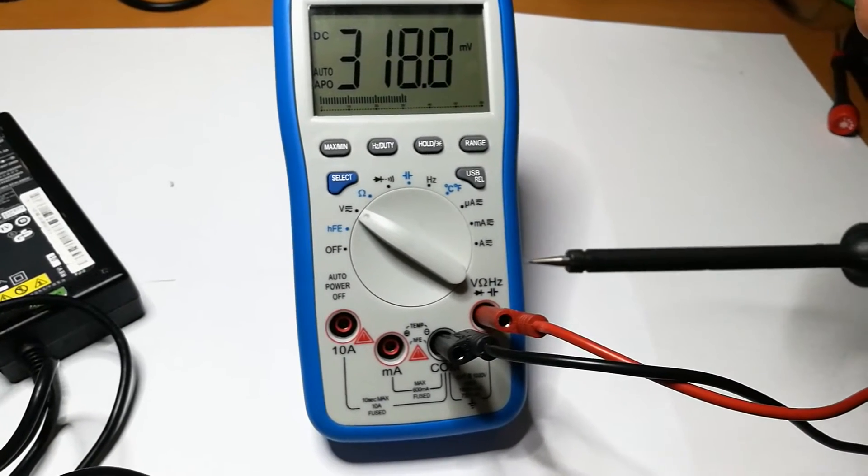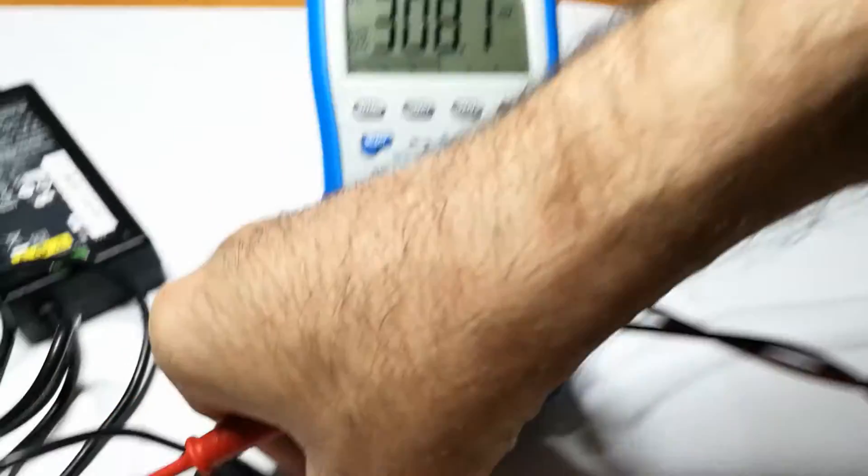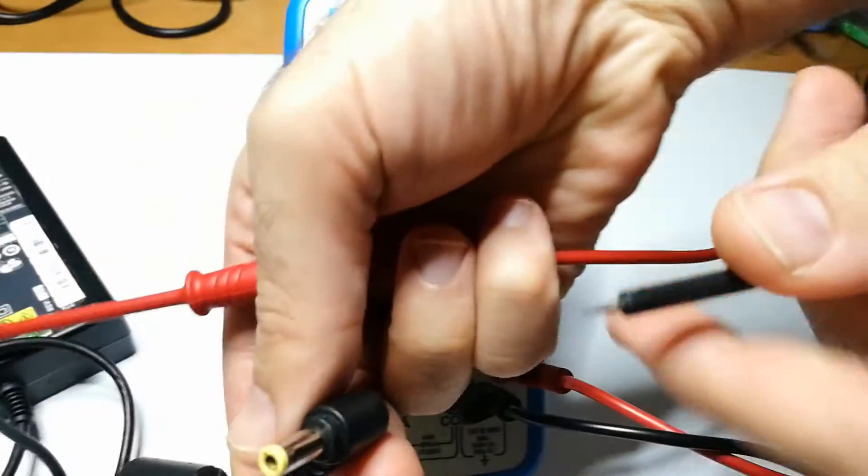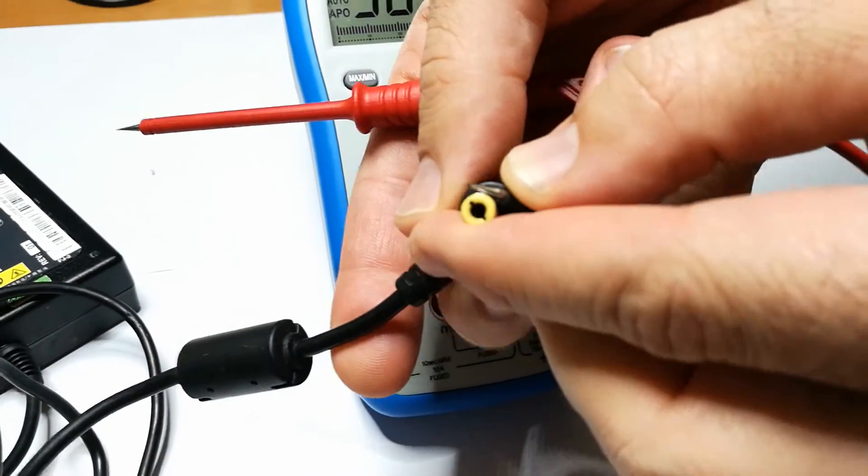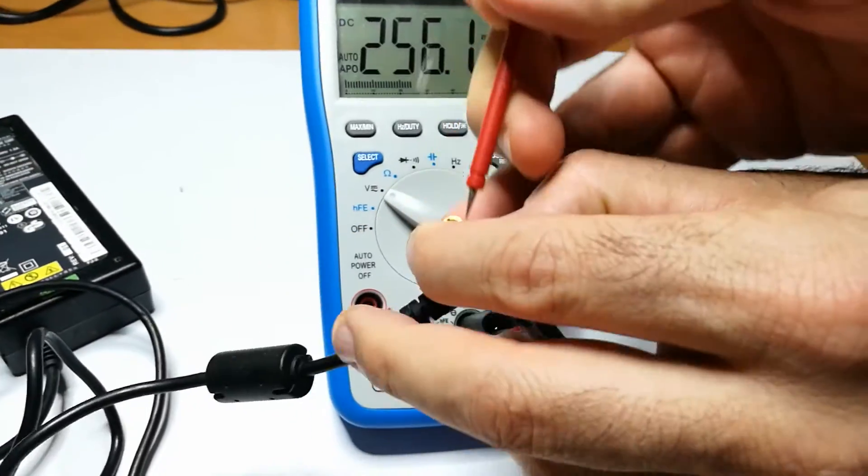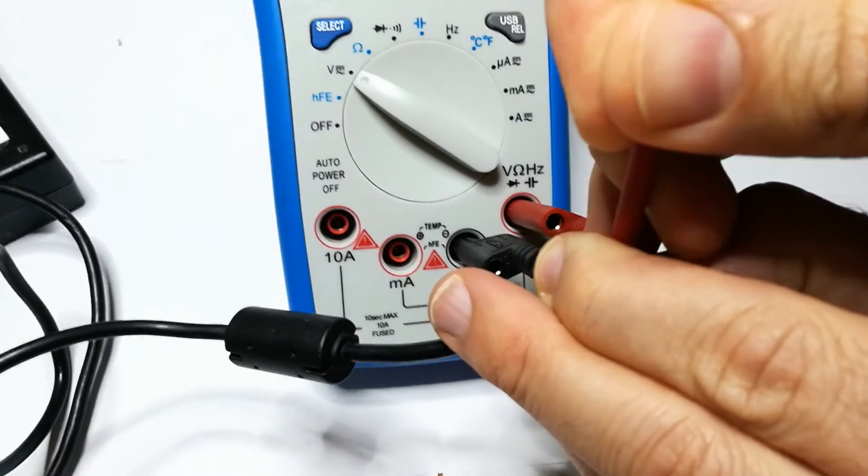The ground probe and the red probe. You have to take the plug and put the black probe on the outside of the plug, and take the red probe and put it inside the plug.